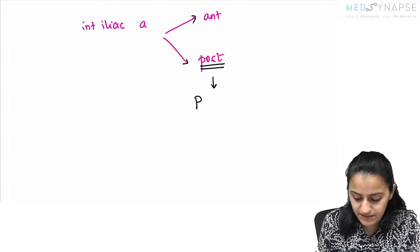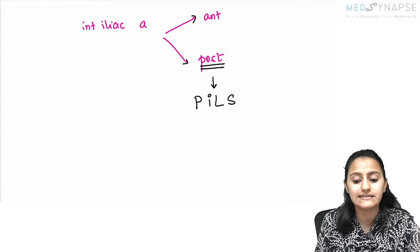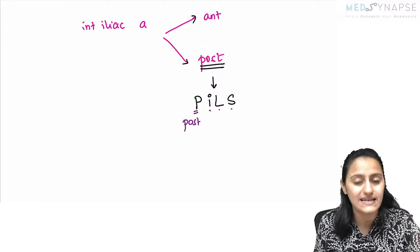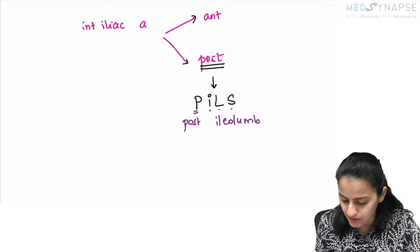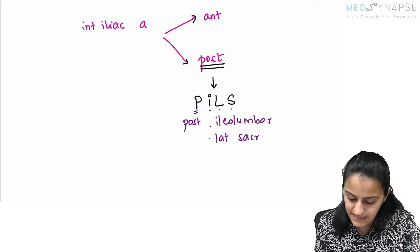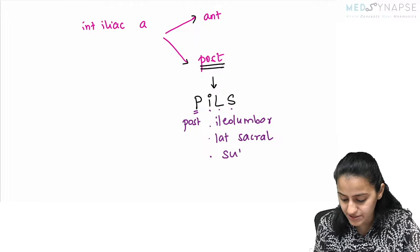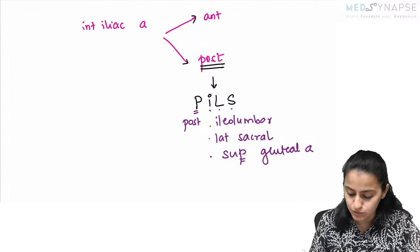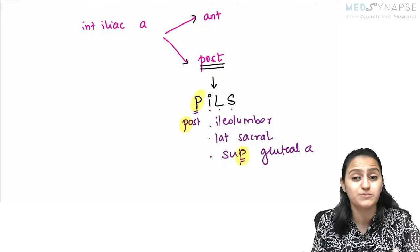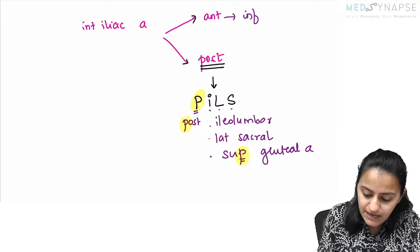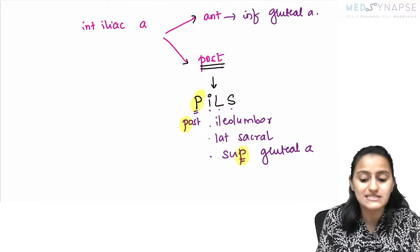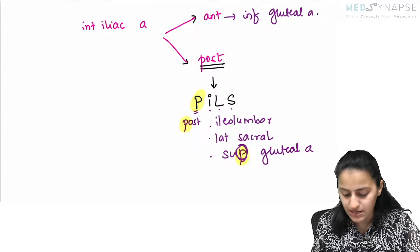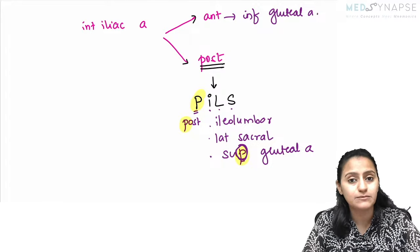From the posterior division of the internal iliac artery — remember the mnemonic PILLS: Ilio-lumbar artery, Lateral sacral artery, and Superior gluteal artery. The superior gluteal artery comes from the posterior division — 'superior' has a 'P' in its context so it's posterior. The inferior gluteal artery comes from the anterior division — this has been asked in one of the recent exams.